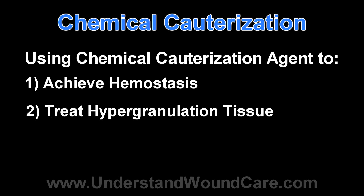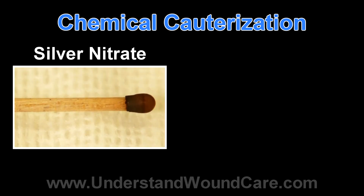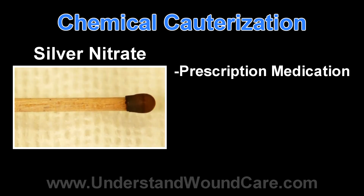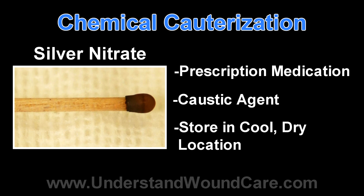Chemical cauterization for hemostasis or treatment of hypergranulation tissue is commonly performed with a prescription medication known as silver nitrate. Silver nitrate is a caustic agent. You can see on the tip this is the silver nitrate — the small dark area on the tip of this applicator. It is important that this be kept in a dark, cool, and dry location, as if it is not, the medication will degrade and be ineffective.